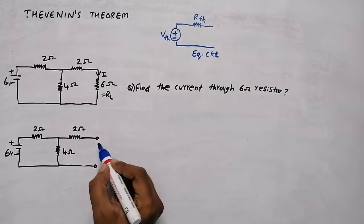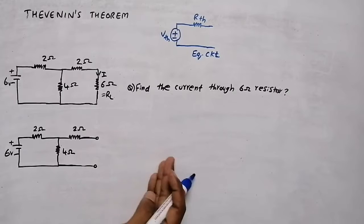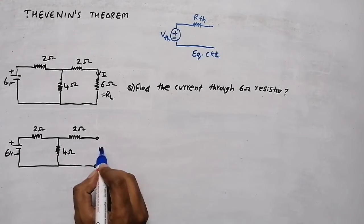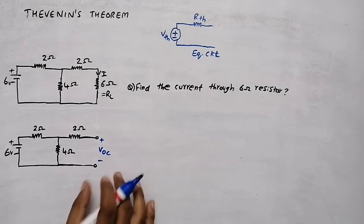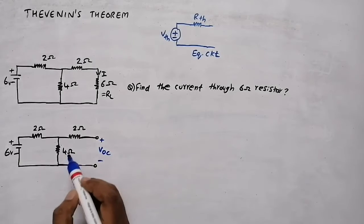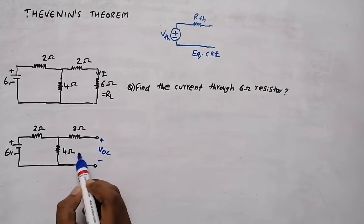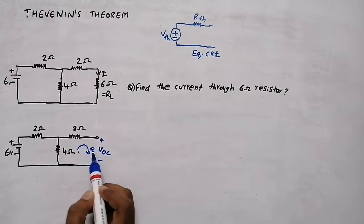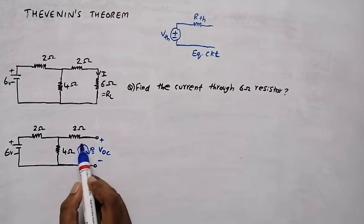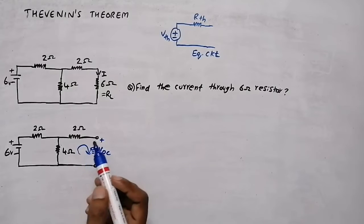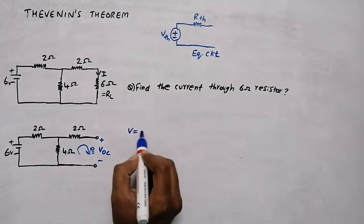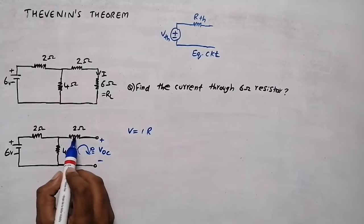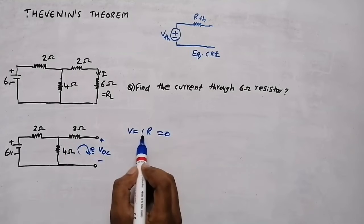Now we need to find the open circuit voltage. By removing the load resistor, we open the circuit at that point. Look at the current here — this is an open circuit, so the current flowing through this mesh will be zero. Because if it were a closed circuit there would be current, but here it is open, so the current through this mesh is zero.